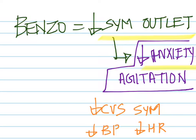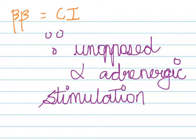Benzos also help relieve these symptoms. They decrease the cardiovascular system's sympathetic response, thus decreasing blood pressure and heart rate. However, never, ever use beta blockers, because beta blockers are contraindicated in cocaine toxicity. Even if they are cardioselective, they will result in unopposed alpha-adrenergic stimulation, and this will make the vasoconstriction even much worse.